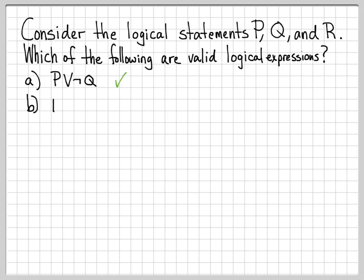What about the logical statement 'P or QR'? Well, this one doesn't make sense. The problem is right here — we have the logical statement Q right next to the logical statement R, and that is not something we're allowed to do. We can't put them right next to each other; there has to be a logical connective between them — either an or symbol or an and symbol. So this is not a valid logical expression.